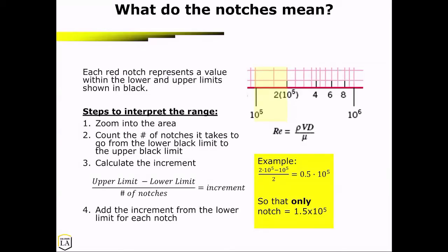So the difference between this point and this point is 0.5 times 10 to the 5th, which means that this notch is 1.5 times 10 to the 5th. That might have seemed obvious.